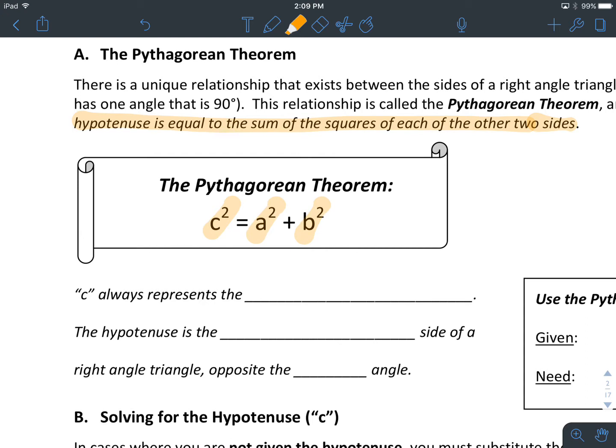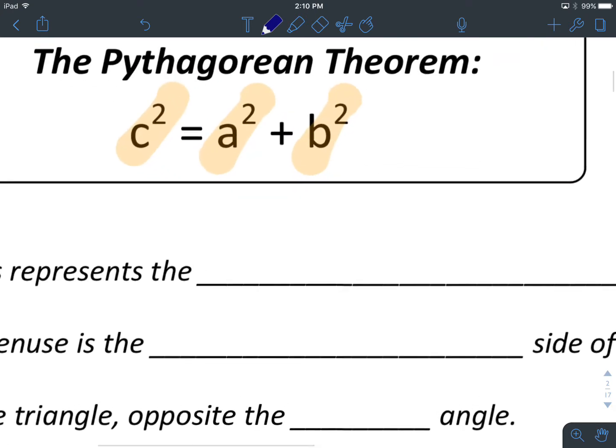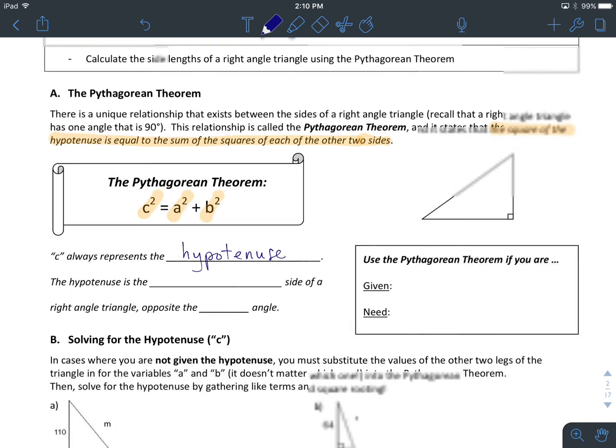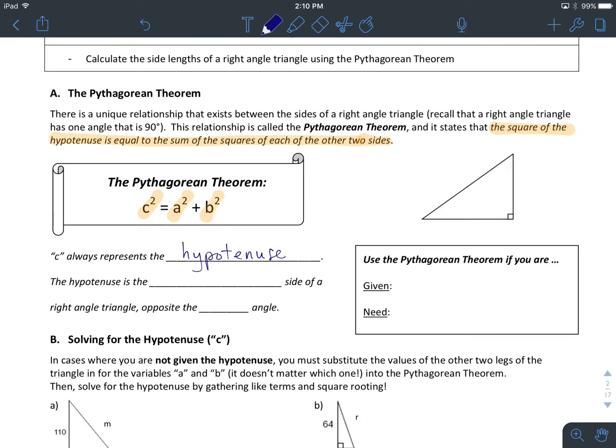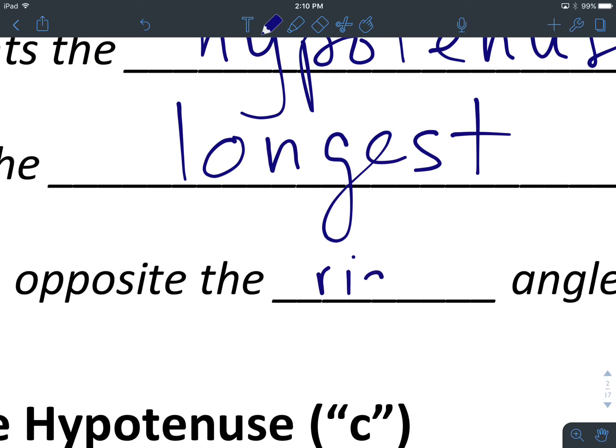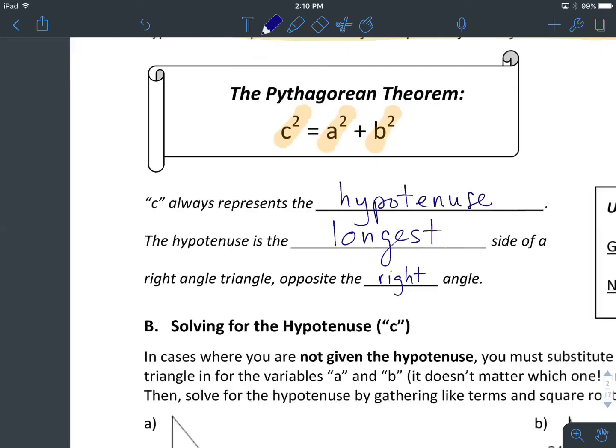So let's get some of the details out of the way here at the beginning. In the Pythagorean Theorem, the variable C always represents the hypotenuse. The other two sides of our triangle can be A and B respectively. It doesn't matter which one is which. How do we recognize the hypotenuse? Well, the hypotenuse is the longest side of our right-angle triangle, which means it is opposite the right angle, or the 90-degree angle, in our triangle.